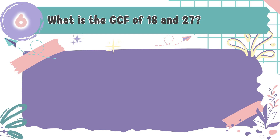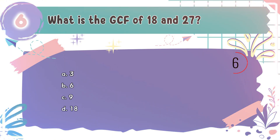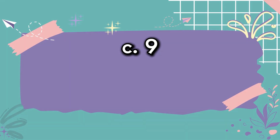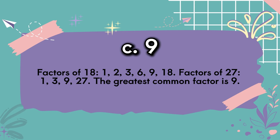Question number 6: What is the GCF of 18 and 27? The choices are A: 3, B: 6, C: 9, D: 18. The correct answer is C, 9. Factors of 18 are 1, 2, 3, 6, 9, and 18. Factors of 27 are 1, 3, 9, and 27. The greatest common factor is 9.